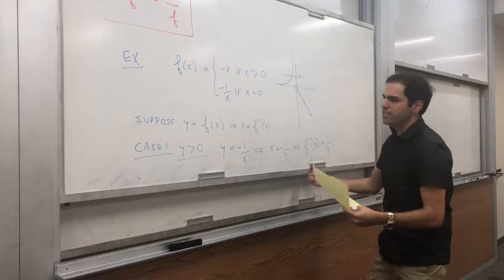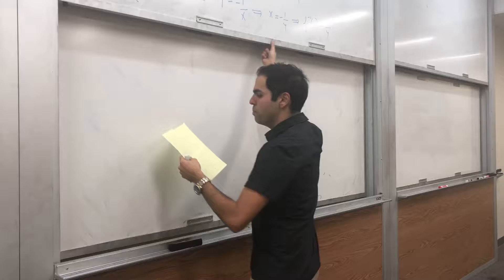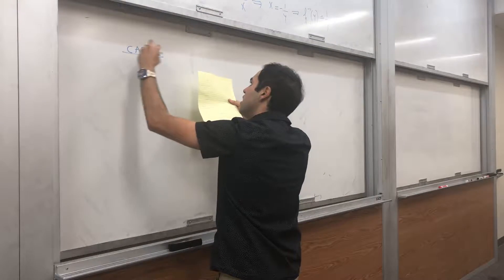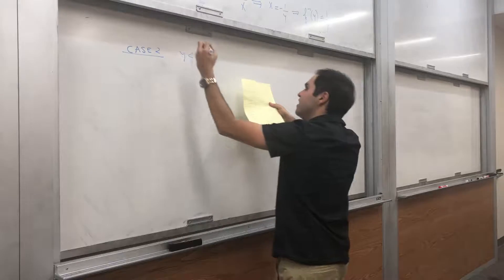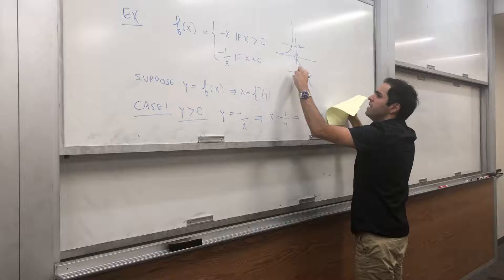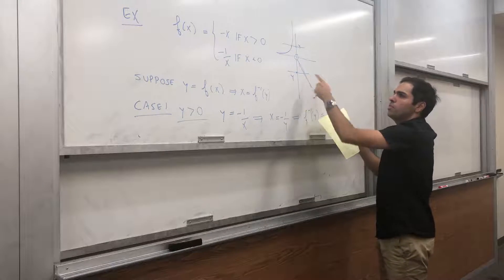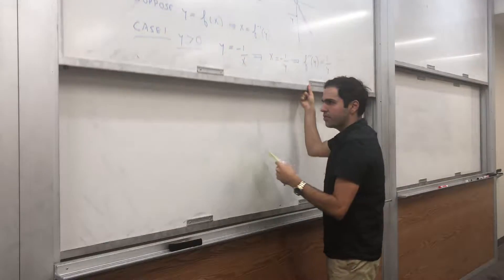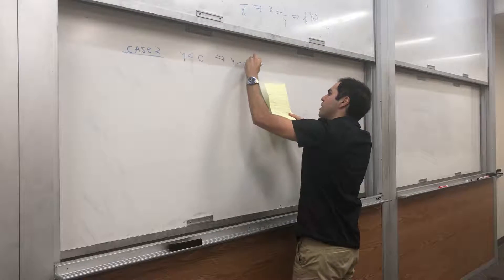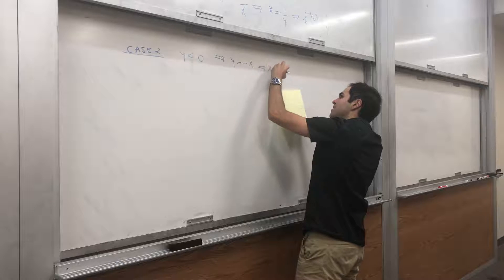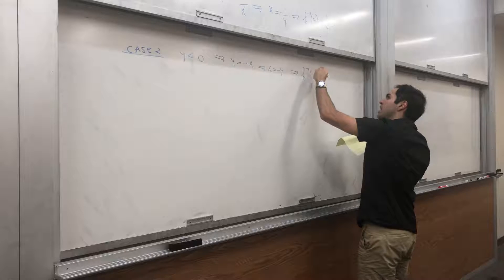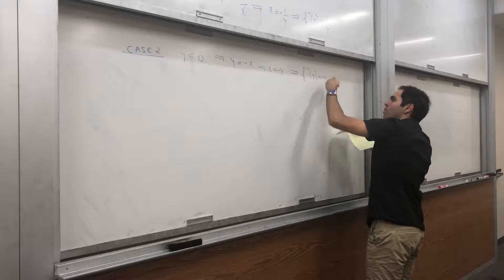Case two, very similar. Suppose y is negative. In that case, if y is negative, we're somewhere here, so y has to be minus x. So y equals minus x, which gives x equals minus y. In that case, f inverse of y equals minus y.